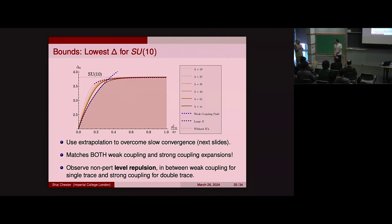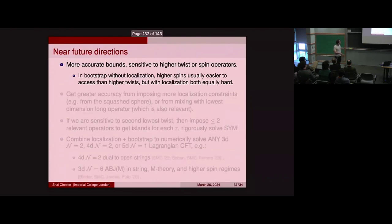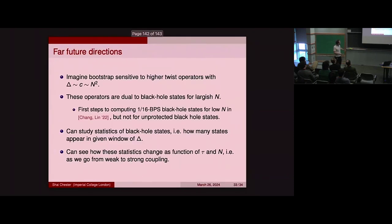Q: As we go to finite N, what would a black hole configuration look like? A: That's a very interesting question. There's some expectation that for sufficiently large N and sufficiently large dimension operators, these should somehow be related to black holes. I'd point to Chi-Ming Chang's talk at this conference, where he was trying to give a more detailed description of what these black hole states might look like for low values of N for 1/16 BPS black hole states. Our black hole states would be totally unprotected, so not the exact same states. From our abstract perspective, we're hoping to eventually get a list of numbers that could tell us something about this.